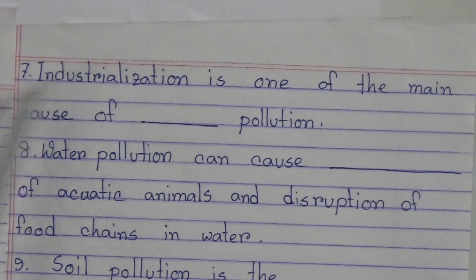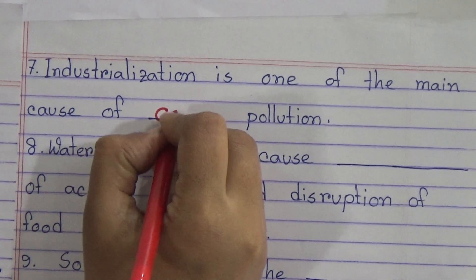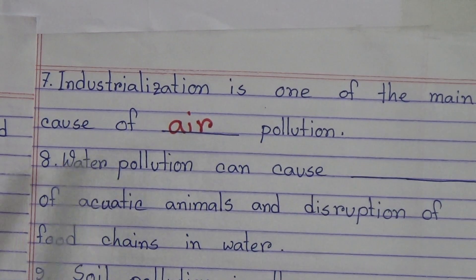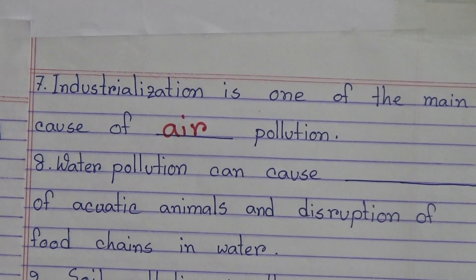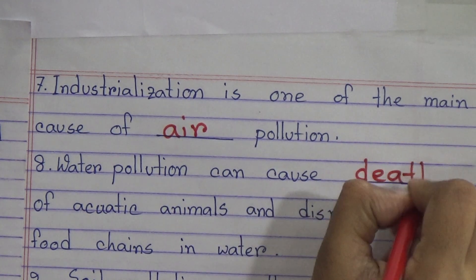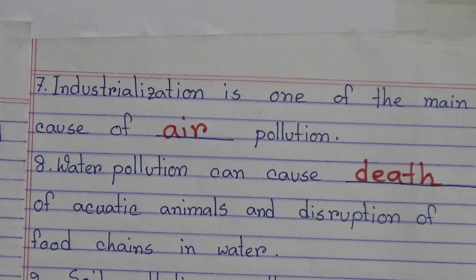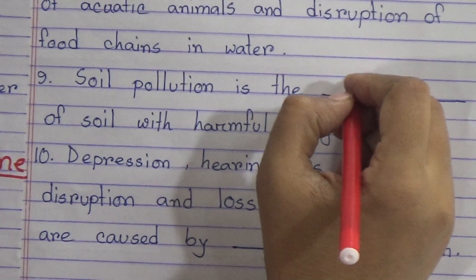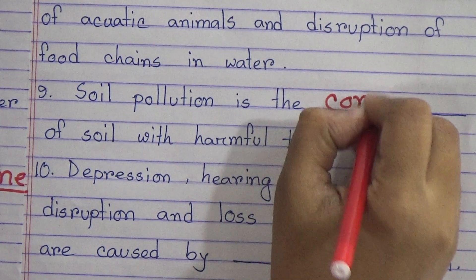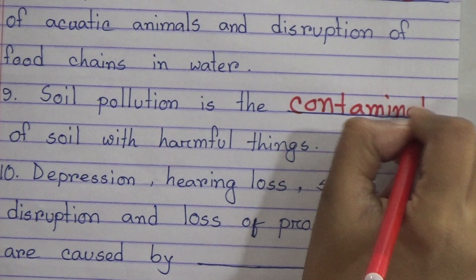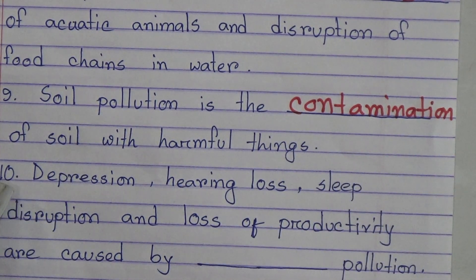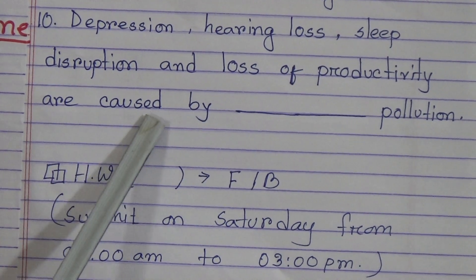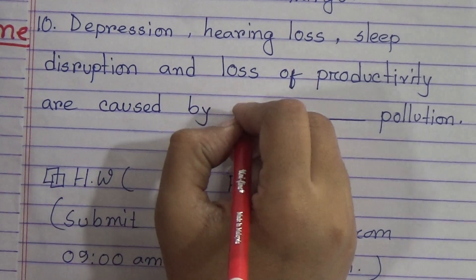Next: industrialization is one of the main causes of blank pollution — answer: air pollution. Next: water pollution can cause blank of aquatic animals and disruption of food chain in water — answer: death. Next: soil pollution is the blank of soil with harmful things — answer: contamination. Last: depression, hearing loss, sleep disruption and loss of productivity are caused by blank pollution — answer: noise or sound pollution.